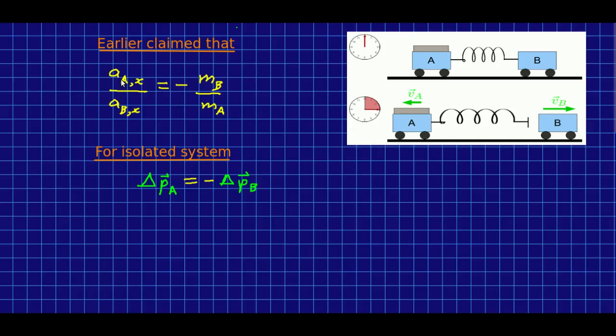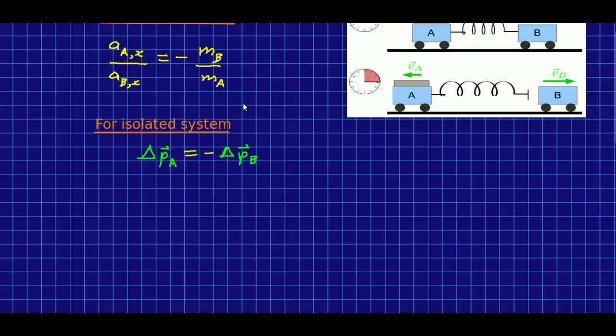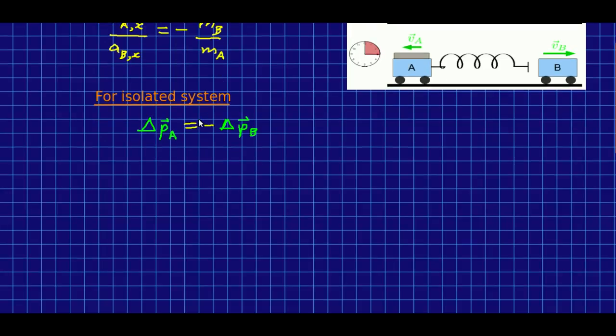In an earlier lecture I claimed that the ratio of accelerations of two interacting objects is the negative inverse ratio of their inertias, just like we've seen for delta v's. Let me just prove that because it's going to be an important principle for us going on.